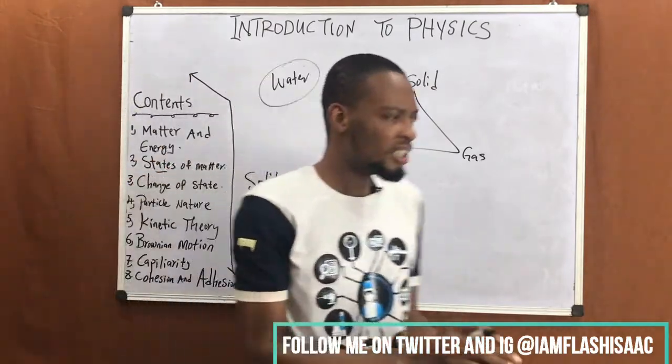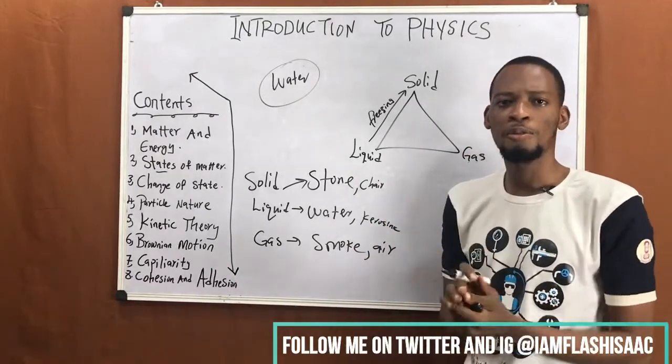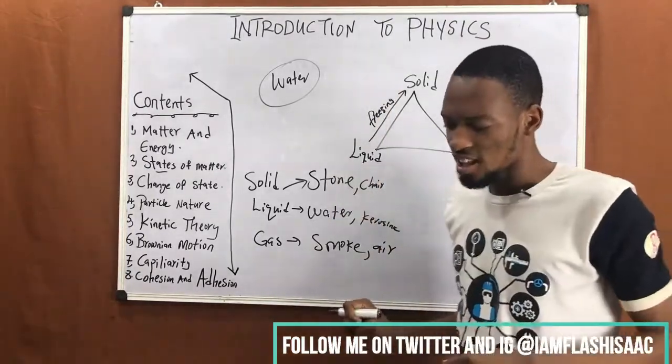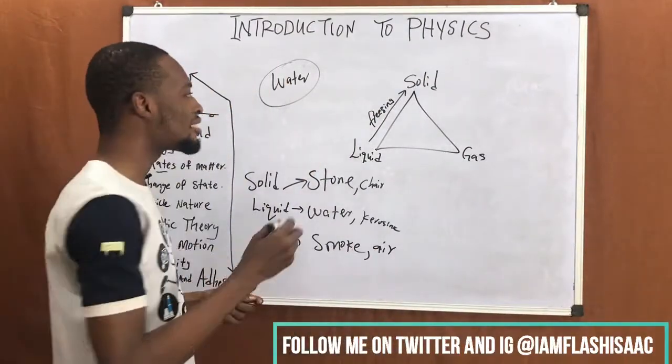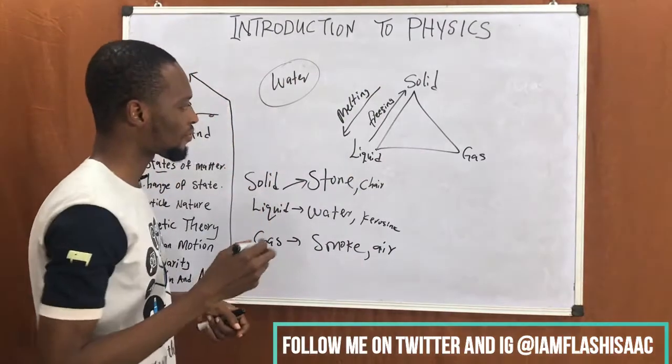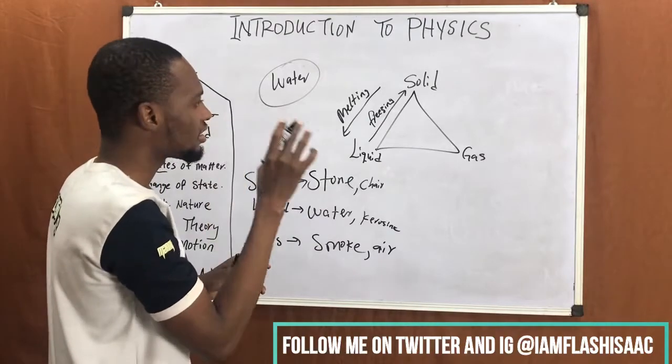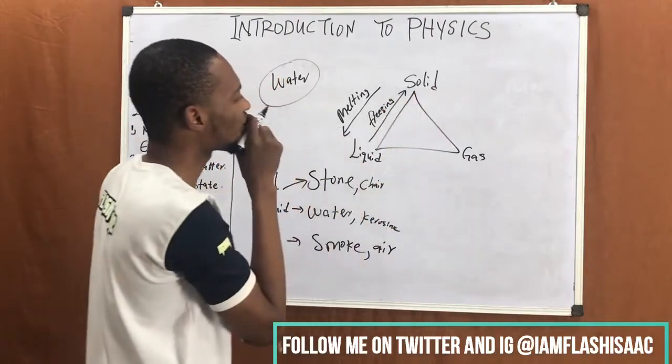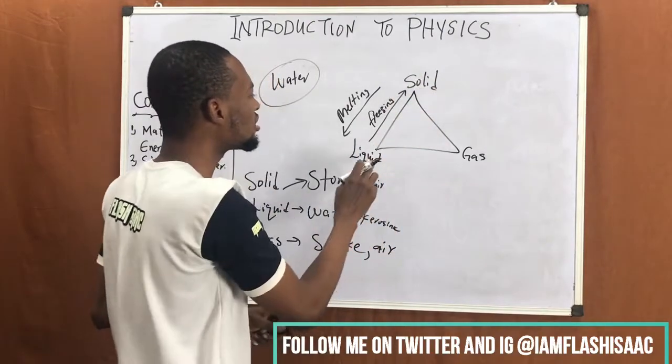Now that same ice block, remove it and keep it somewhere that it's not cold. What would you notice? After some time again, it turns to liquid. You say the block has melted. In that case, it's called melting. Solid can turn to liquid, liquid can turn to solid.